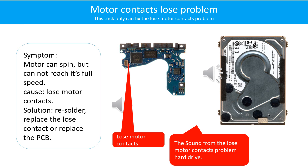Motor contact loose problem. Symptom: the motor can spin but cannot reach its full speed. Cause: loose motor contacts. Solution: resolder or replace the loose contacts, or replace the PCB board.